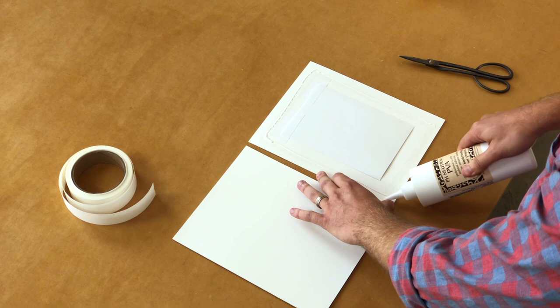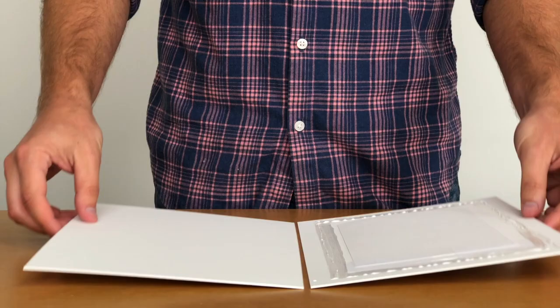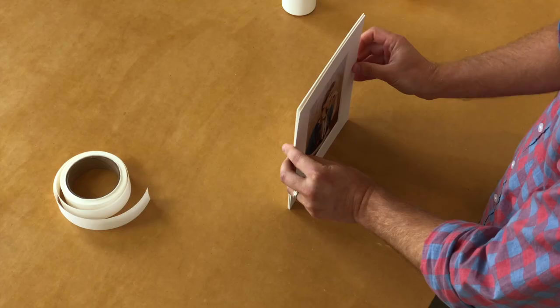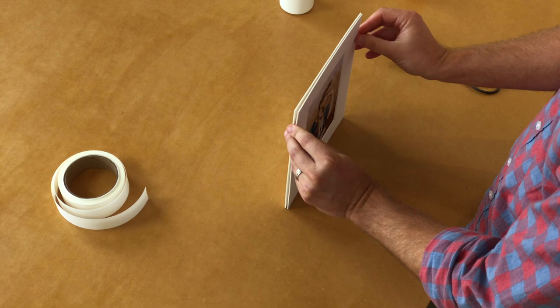And how I do it is I just usually set it up vertically to get it flush. Line it up. Obviously, you want to make sure you have clean hands. You could use white gloves if you want to. But as long as you have clean hands, you're totally fine. And then just lightly press on all the sides. And that's it. You have a matted print.